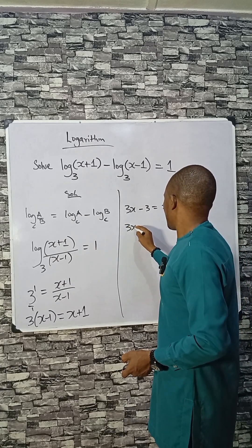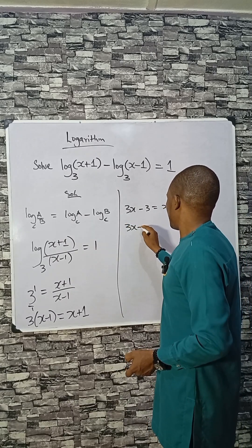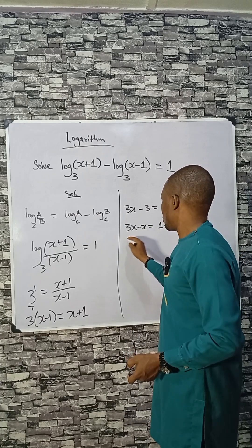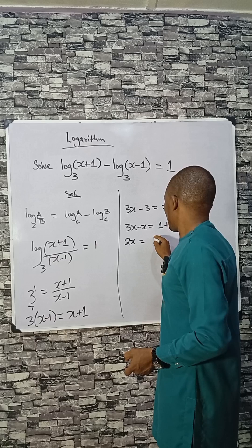Simplifying: 3x minus x equals 1 plus 3. This is 2x equals 4.